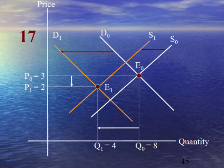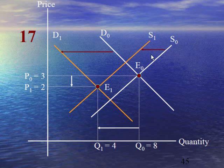In case number 17, we assume that fall in demand is more than fall in supply. This is a case of surplus because more buyers are not willing to buy the products, although there is a decrease in supply. But in the end there is surplus in the market and prices will decrease from 3 to 2, and equilibrium quantity moves from 8 to 4.